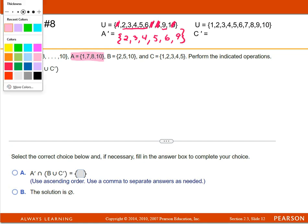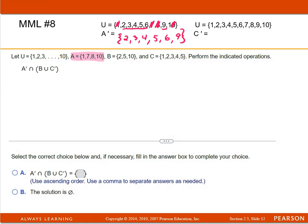And then while I'm at it I'm just gonna go ahead and do the complement of C. C is 1, 2, 3, 4, and 5. So I'm gonna go up to the universal set and remove the 1, the 2, the 3, the 4, and the 5.